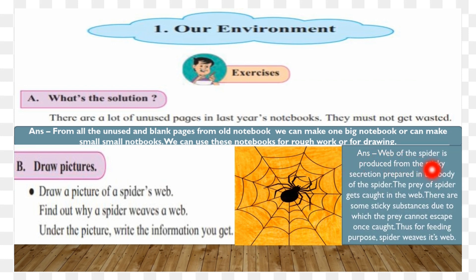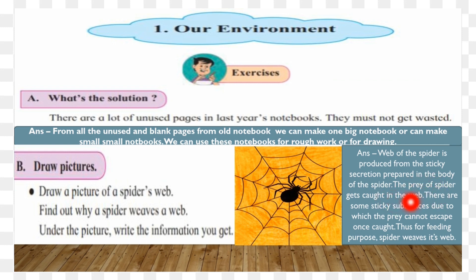The web of the spider is produced from a sticky secretion prepared in the body of the spider. The prey of the spider gets caught in the web. There are sticky substances due to which the prey cannot escape once caught. Thus, for feeding purposes, the spider uses its web.